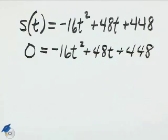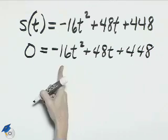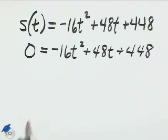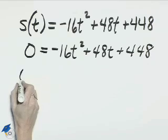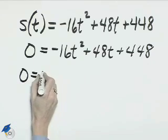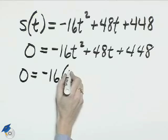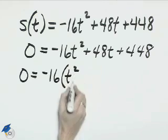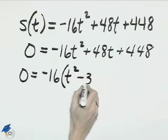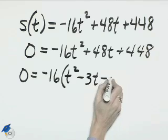We can solve this by factoring. First there is a greatest common factor of 16 and we can factor out the negative along with that. So let's factor negative 16 out of each of those terms. That will leave us with positive t squared, a negative 3t and a negative 28.